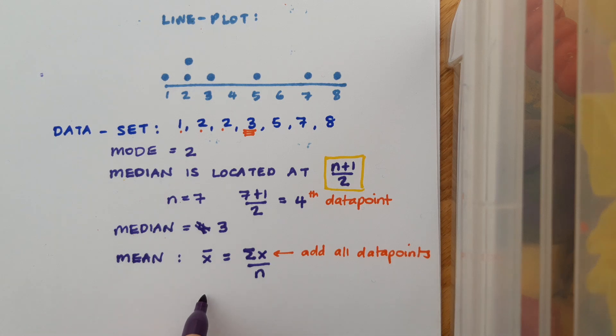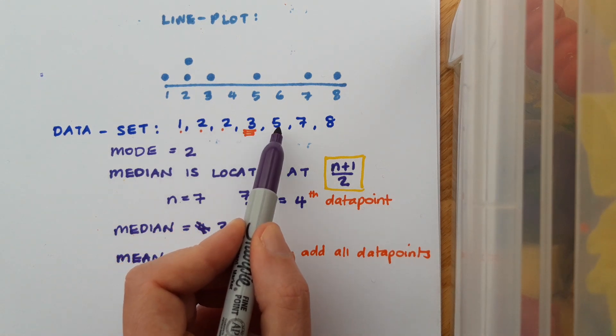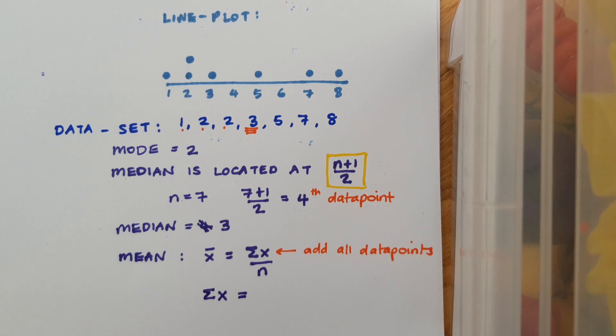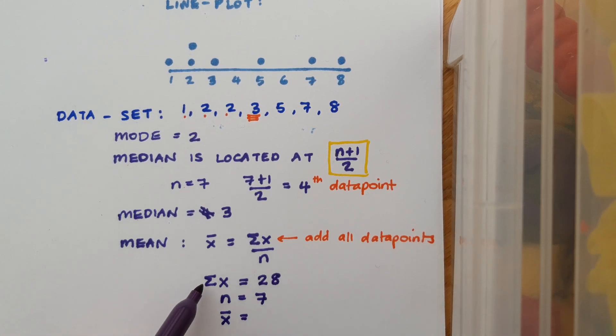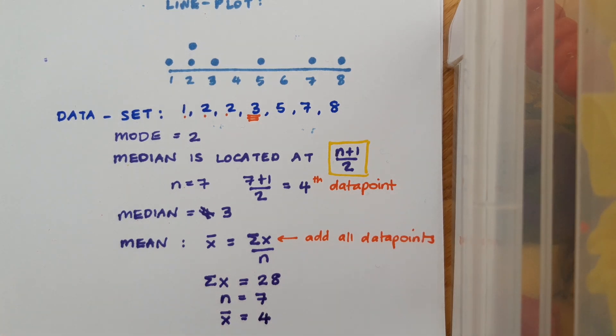And I'll get that by simply adding up 1 and 2 and 2 and 3 and 5 and 7 and 8. And in this case, that comes out as 28. The n, in this case, we've already said, is 7. And to calculate my mean, I'm simply going to divide summation x by n. And in this case, that's 4. And this is just a nice, concise way of laying out that.